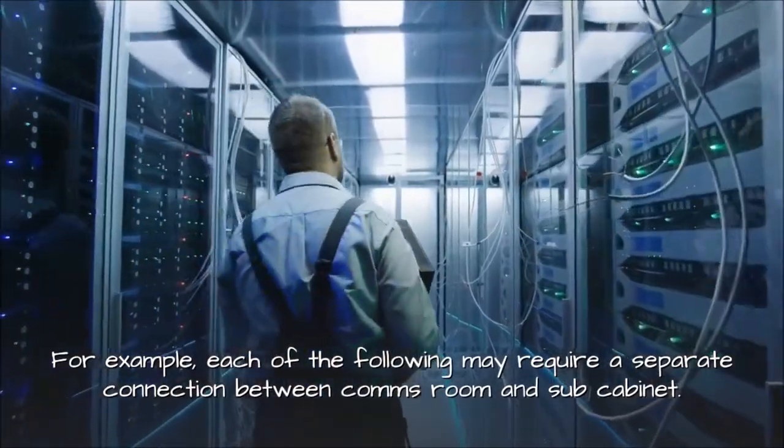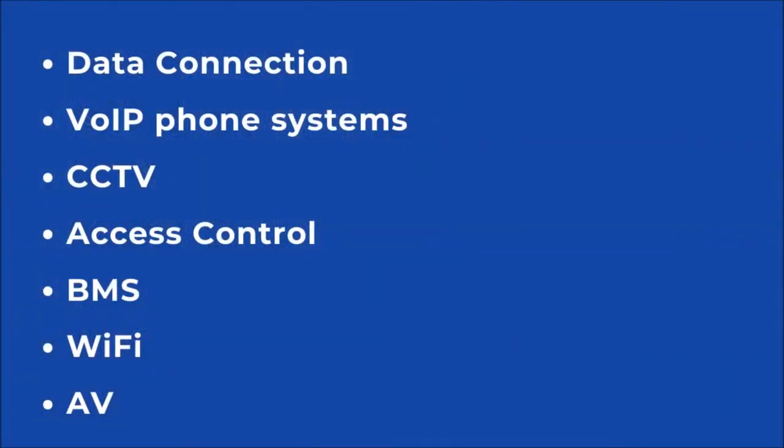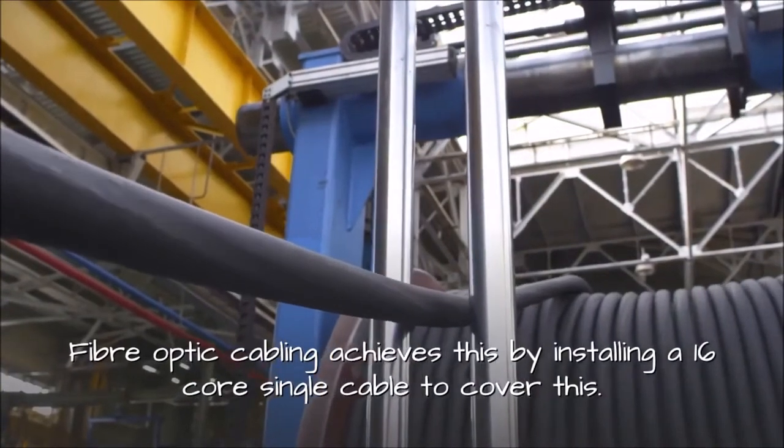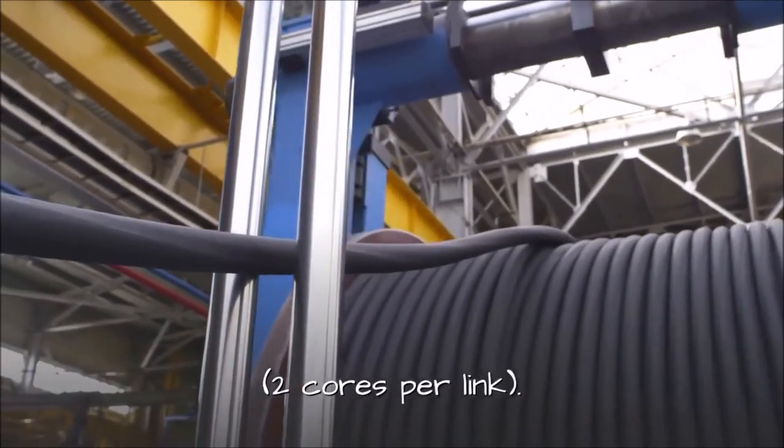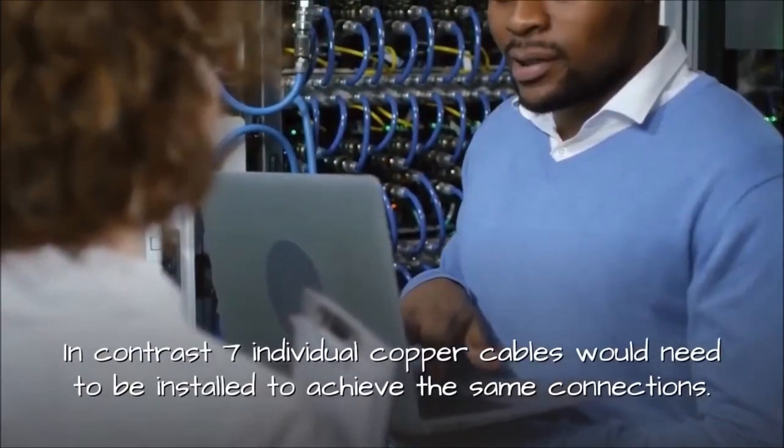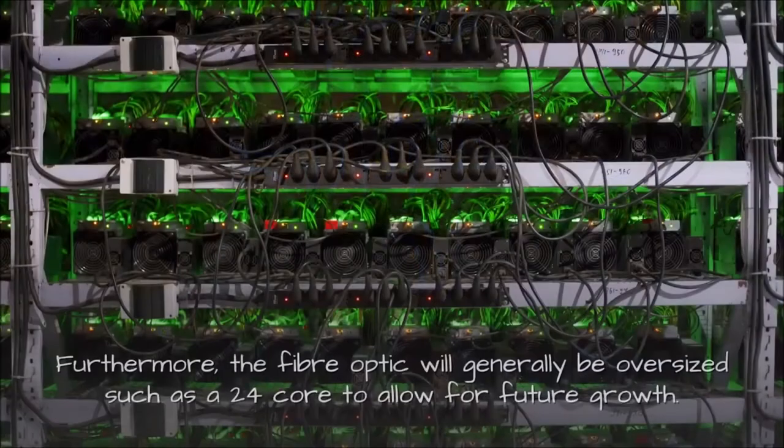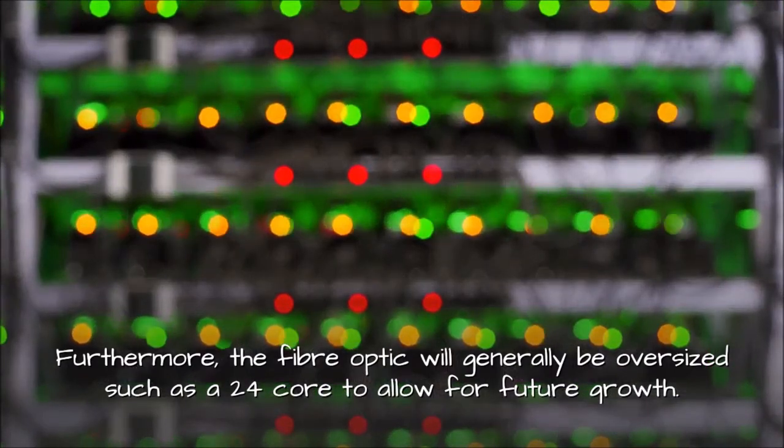For example, each of the following may require a separate connection between comms room and sub cabinet: data connection, VoIP phone systems, CCTV, access control, BMS, Wi-Fi, audio visual. Fiber optic cabling achieves this by installing a 16 core single cable to cover this. Two cores per link. In contrast seven individual copper cables would need to be installed to achieve the same connections. Furthermore, the fiber optic will generally be oversized such as a 24 core to allow for future growth.